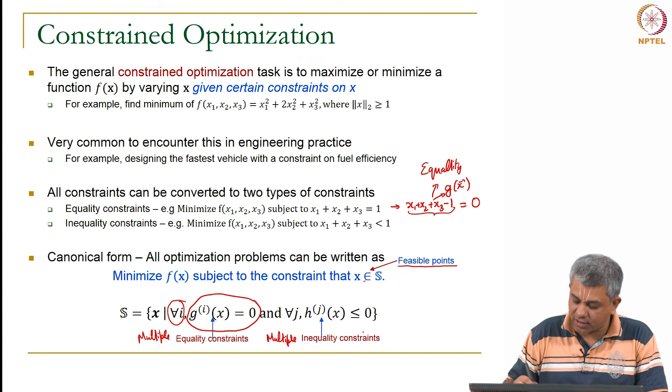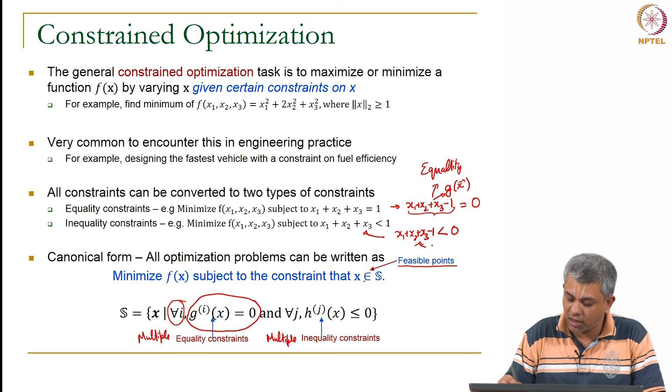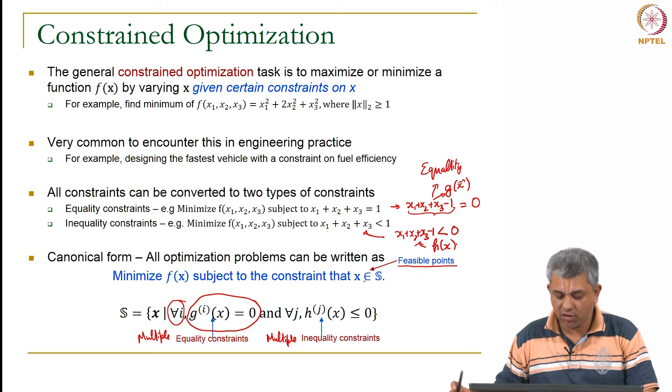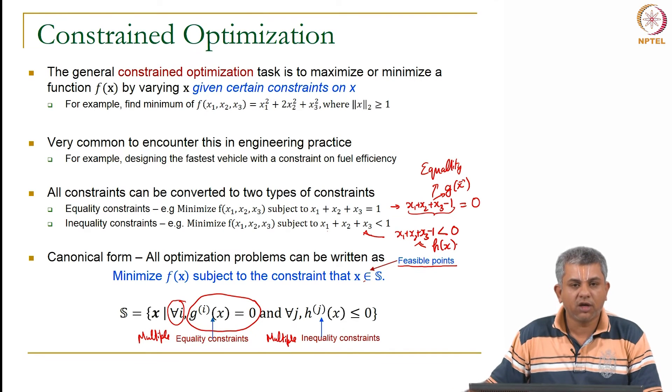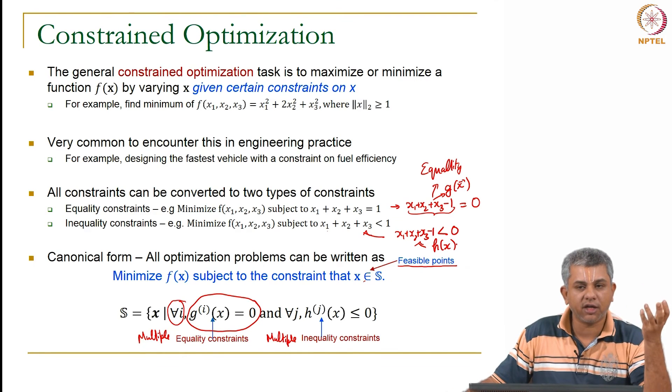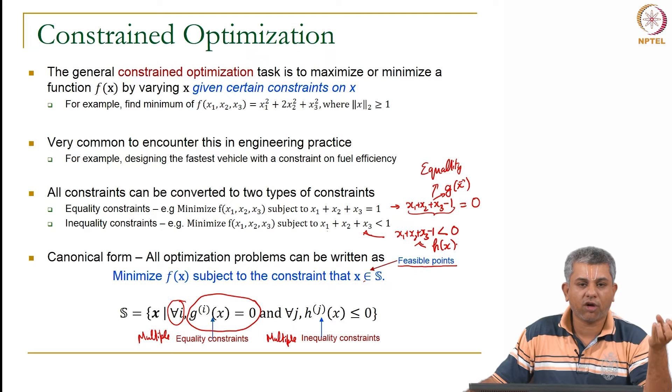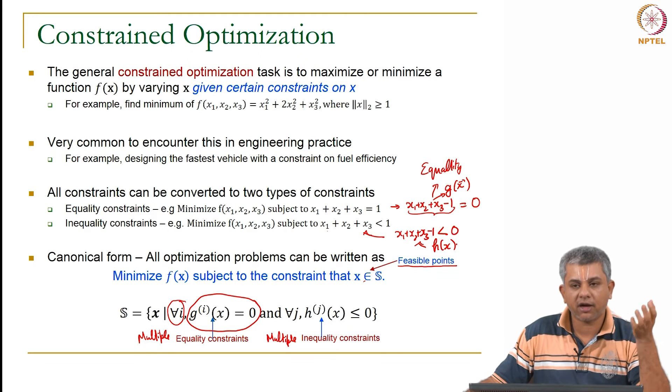Similarly, all inequality constraints can be written as something less than or equal to 0. This can be written as x₁ + x₂ + x₃ - 1 < 0, and now your h(x) would be x₁ + x₂ + x₃ - 1. So the feasibility set is usually a combination of equality constraints and inequality constraints.